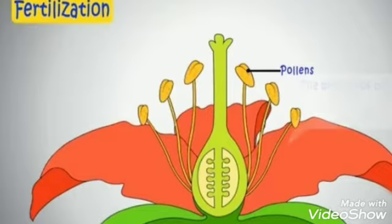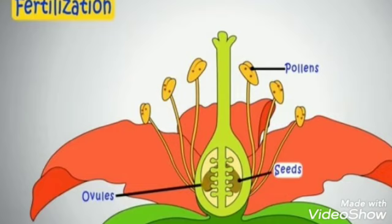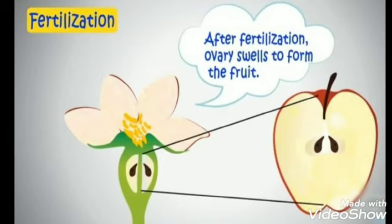Fertilization. When pollens from the anther of the stamen join with the ovules present in the ovary, we call it fertilization. Fertilization forms the seed inside the ovary. And after fertilization, the ovary changes into a fruit.